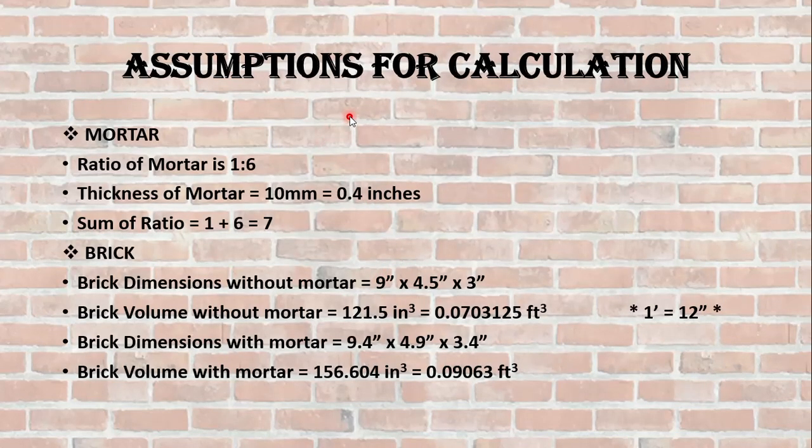These are the assumptions that we will consider for our calculation. Ratio of mortar is 1:6, meaning 1 part of cement and 6 parts of sand. The thickness of mortar would be 10mm, which is 0.4 inches. Brick dimensions would be 9 x 4.5 x 3 inches without mortar, and with mortar it will become 9.4 x 4.9 x 3.4 as we have considered 0.4 inches thickness of mortar. Their volumes are calculated by multiplying these three dimensions.